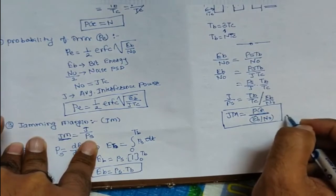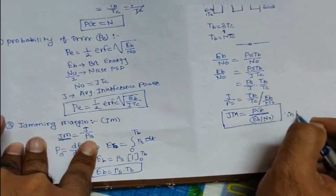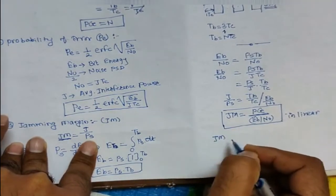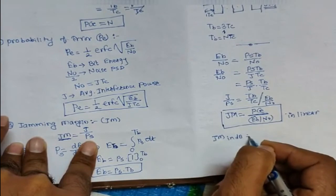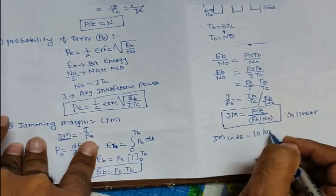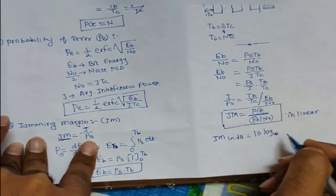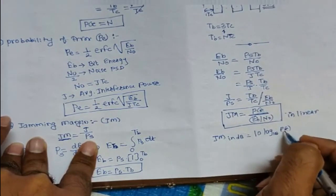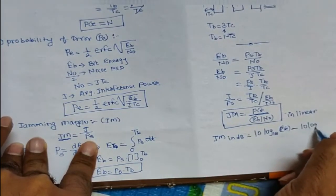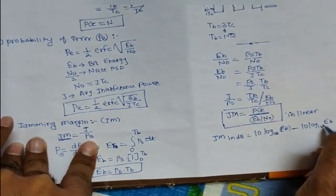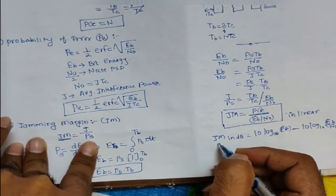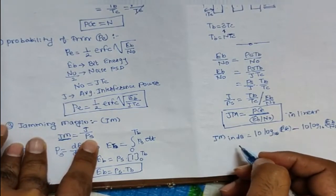This gives the jamming margin in linear value. To express the jamming margin in decibels, since this is a power relationship, we use: JM (dB) = 10·log₁₀(processing gain) − 10·log₁₀(Eb/N0). This equation gives the value of jamming margin in decibels. This covers all three parameters of the DSSS system.